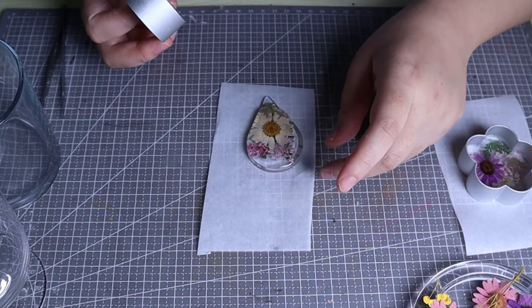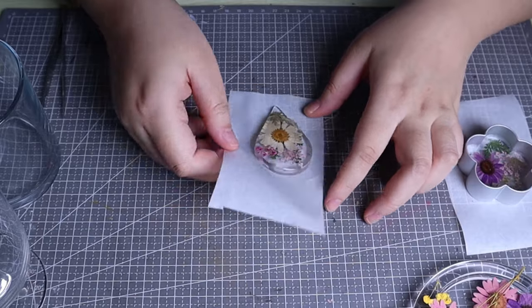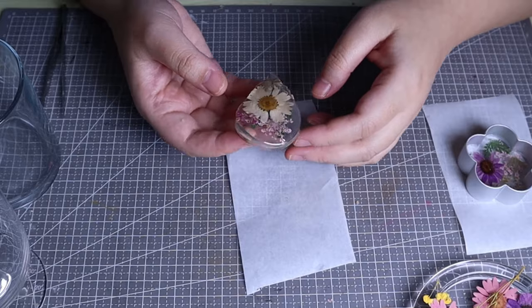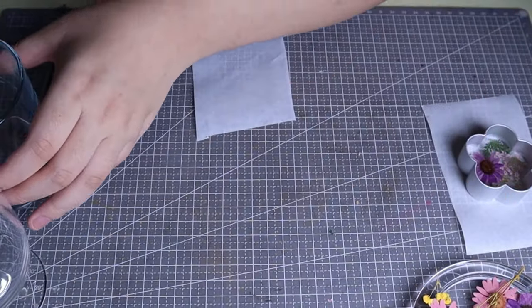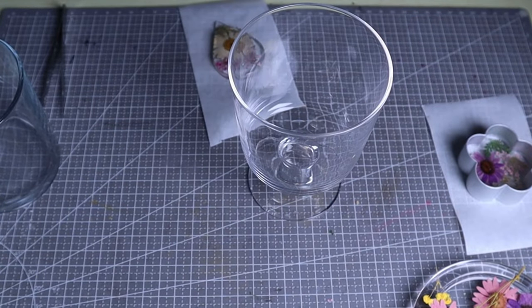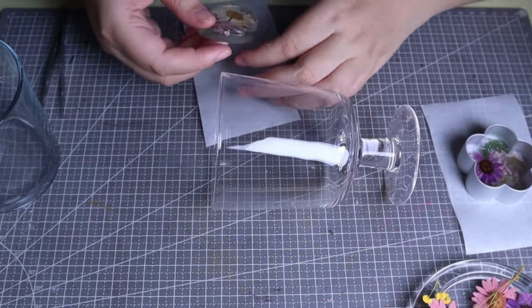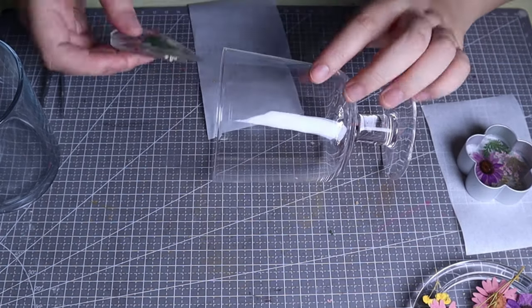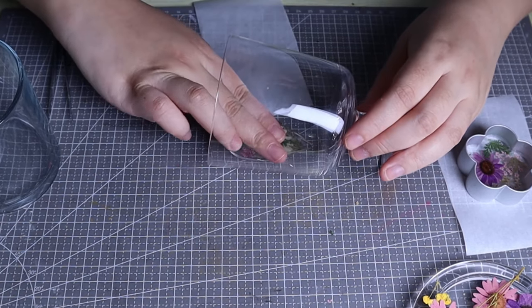Carefully demold the gel wax slice. After confirming the position of the glass, press the glossy side of the slice onto the inner wall of the glass. Make sure to press it flat and push out any air bubbles on the contact surface. Also, avoid repeatedly tearing off and pressing it back on, as this will create air bubbles.